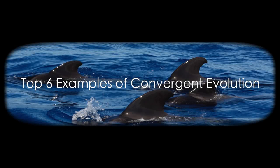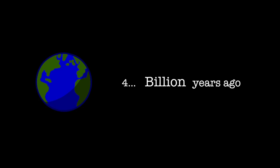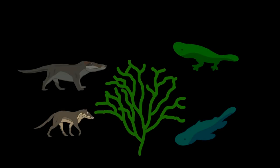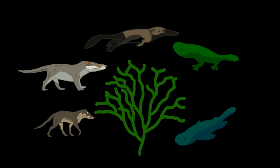In this video I'll be discussing convergent evolution and six examples I think are astonishing. All life that exists on our planet today can be traced back to a common ancestor that lived four billion years ago. Through hundreds of millions of years of divergent evolution, new species arose that were uniquely adapted to their environments.